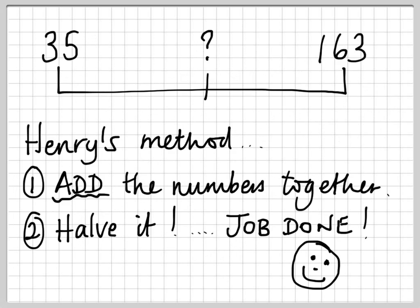Now let's have a little look at Henry's way. Same problem again. Halfway between 35 and 163. Henry's method, add the two numbers together. 163 add 35. 3 and 5 makes 8, 6 and 3 makes 9, and then the 1 goes down here.